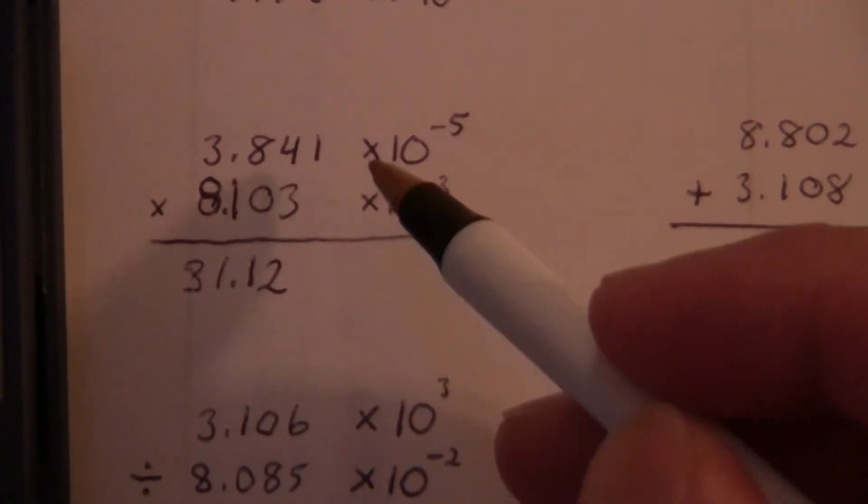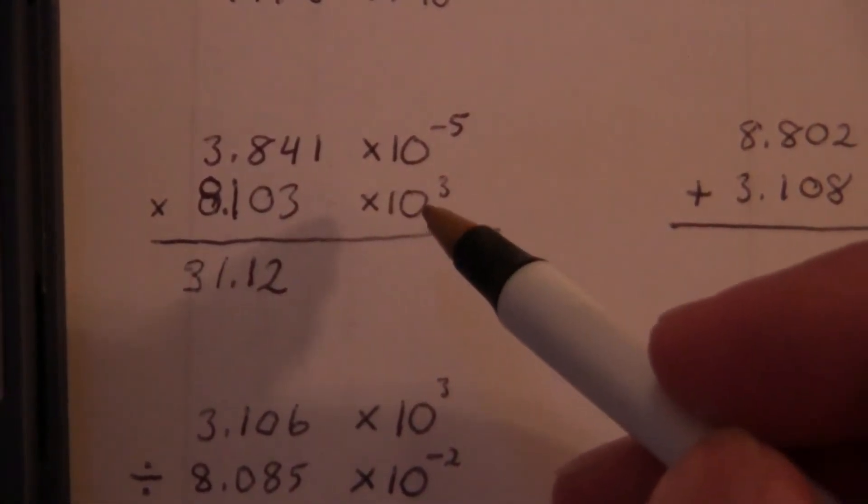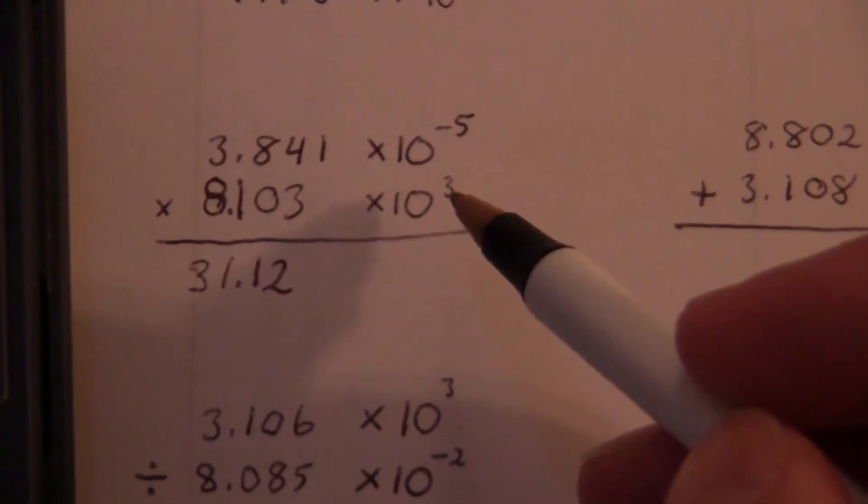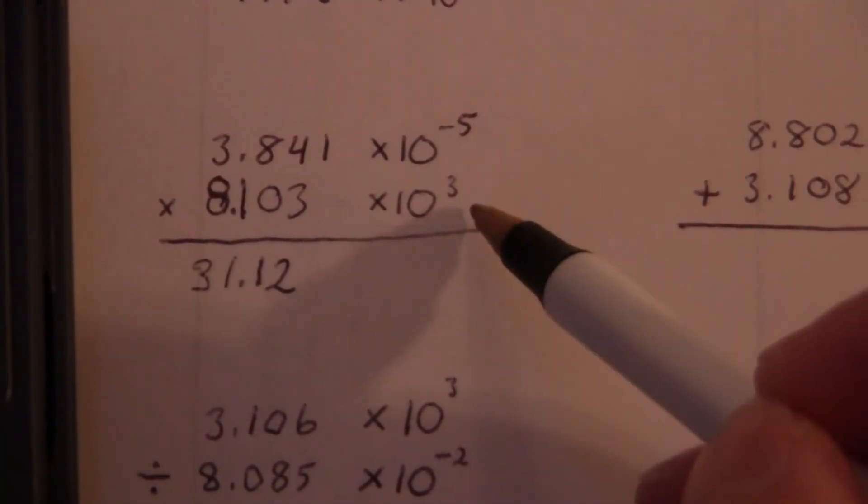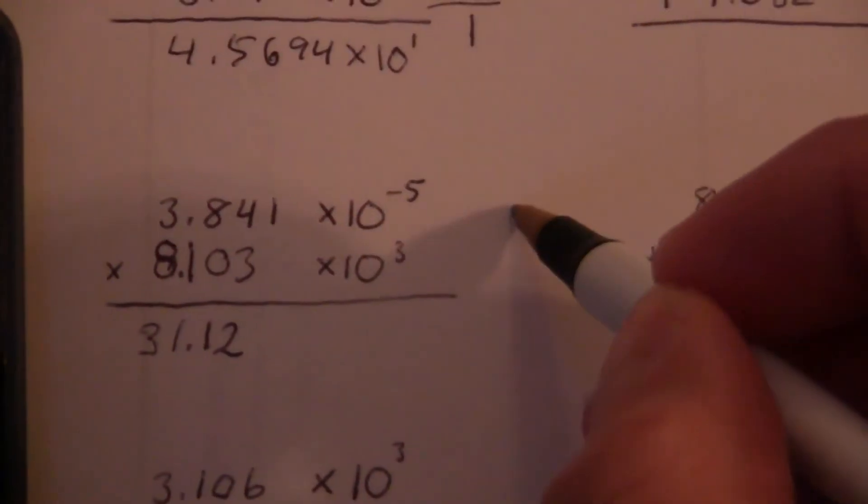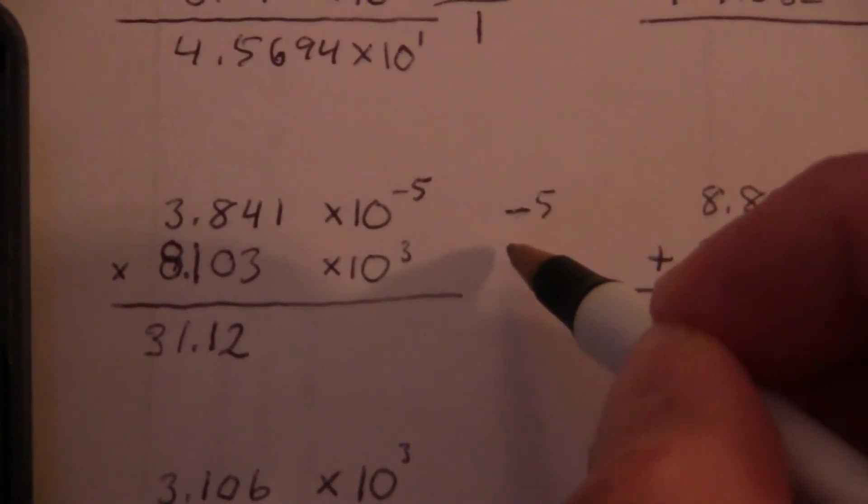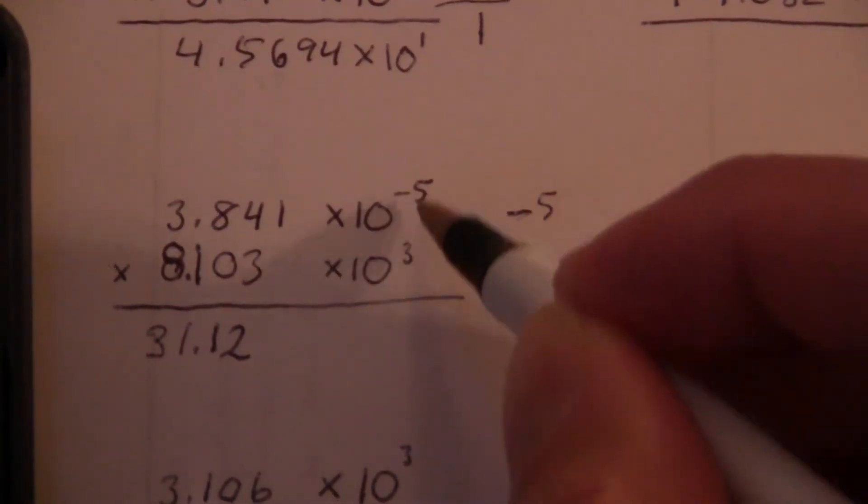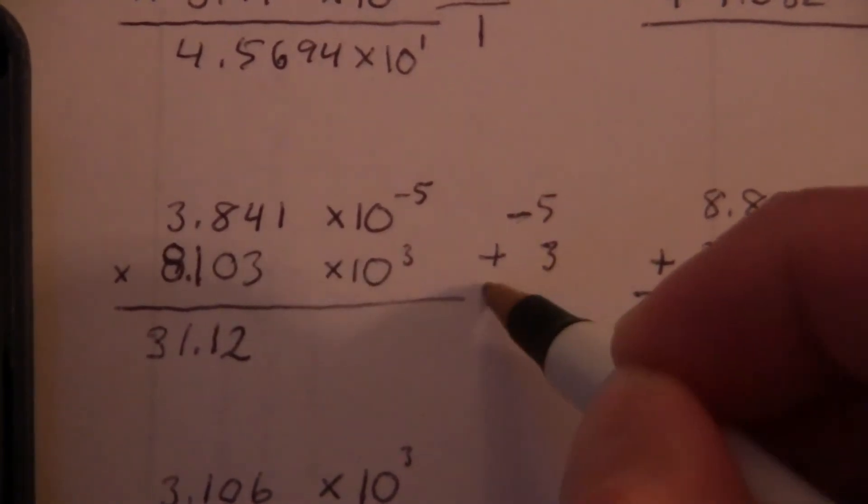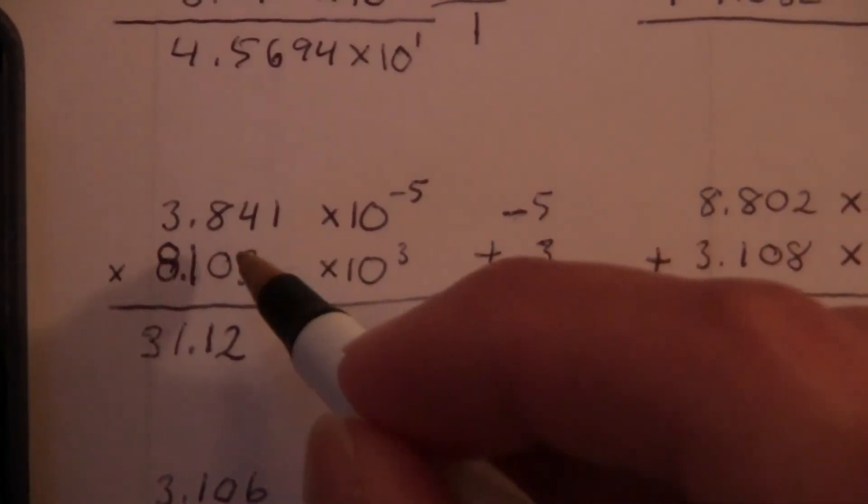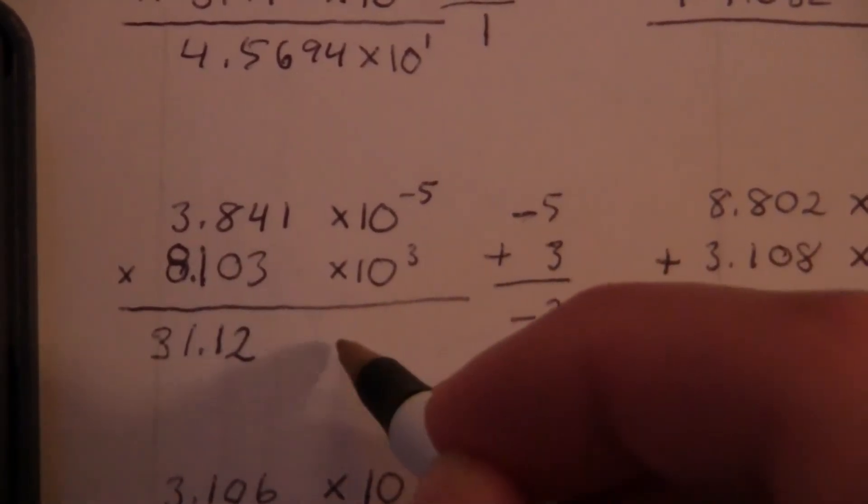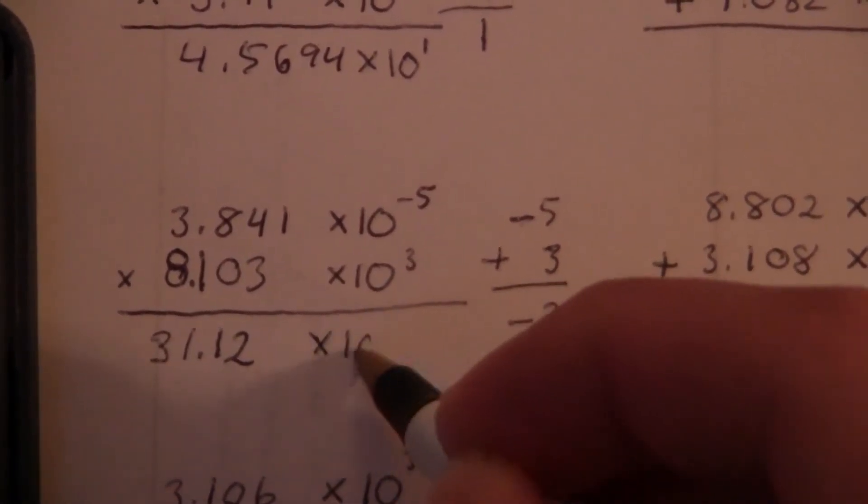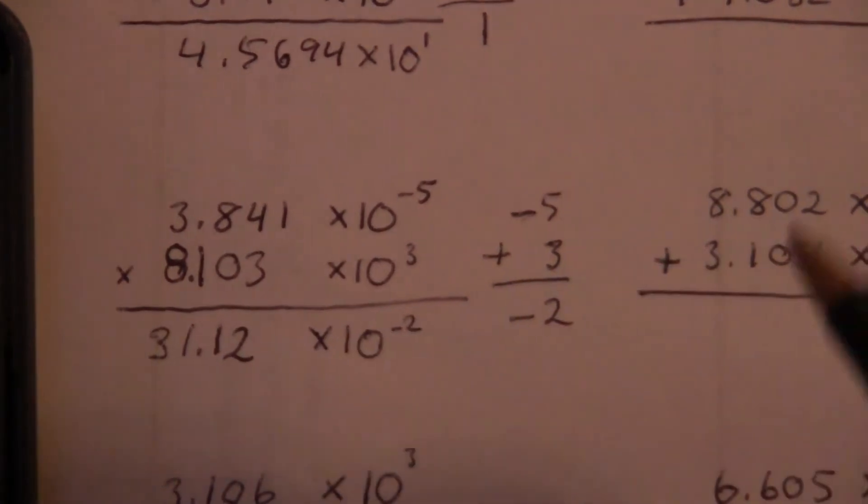So we're done with this part now. And times 10 to, what are we going to do here? We're multiplying, so we add the exponents. So again, negative 5 plus, we're adding 3. And so that gives us negative 5 plus 3 will be negative 2.